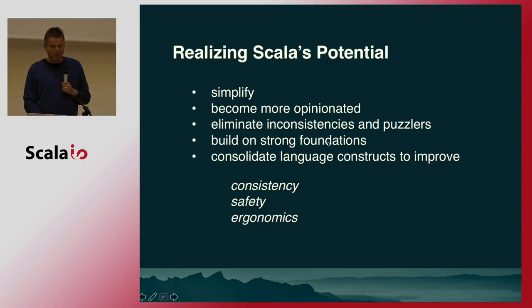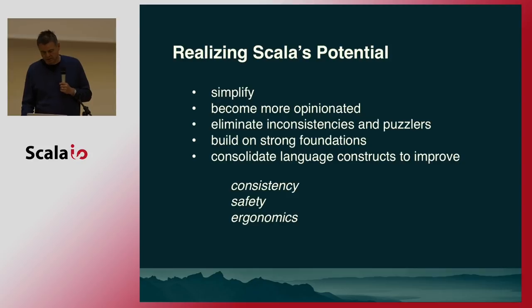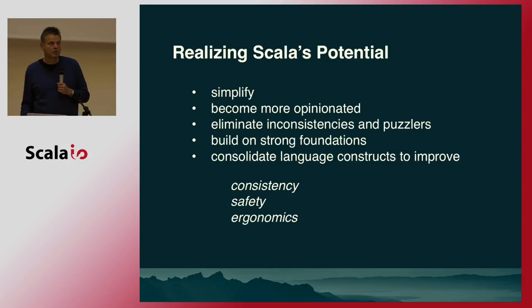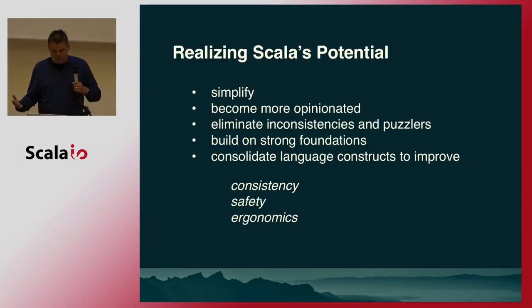One thing we can do now and profit from: when we started Scala, we did so in a void because we didn't really have very good foundations. The foundations that existed were things like Featherweight Java — essentially the core calculus for Java, which was very limited — or lambda calculus, which covers only the functional part, or the ML module system literature. But by now we have strong foundations with the DOT calculus, and they have already influenced the language design in many very good ways. We have good guidance to say a certain feature would map well into our formal calculus, or another wouldn't, or for a third feature we can actually show that it's unsound. Finally, what we want to do is consolidate language constructs to improve consistency, safety, and ergonomics.